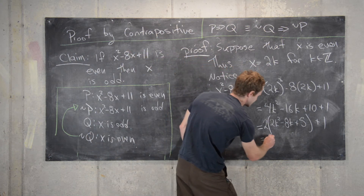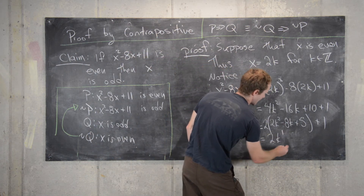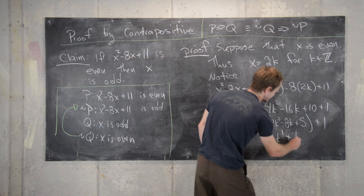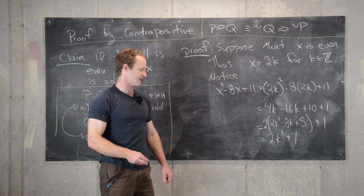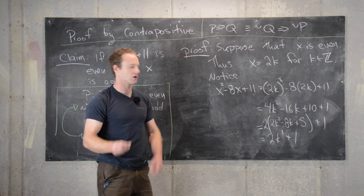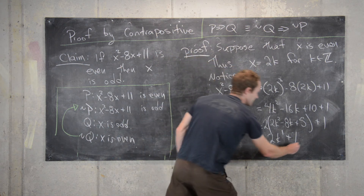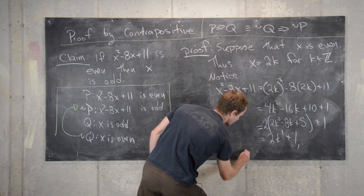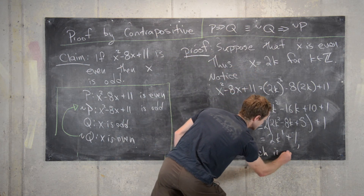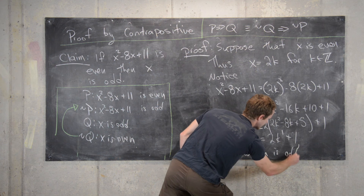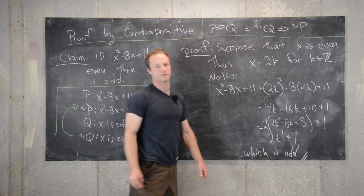This is equal to 2k prime plus 1, where k prime absorbs all the rest into one piece. This is odd, and that completes the proof.